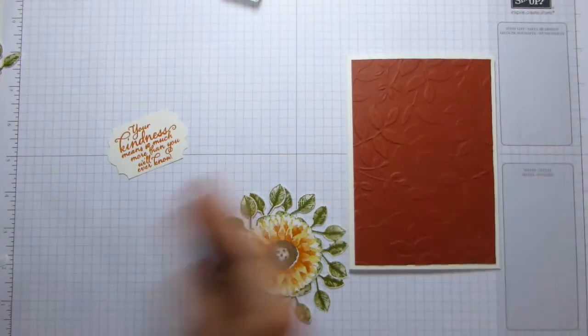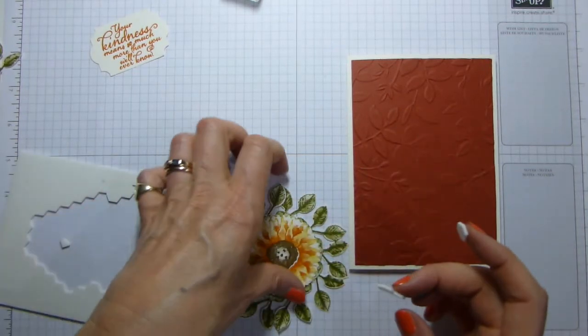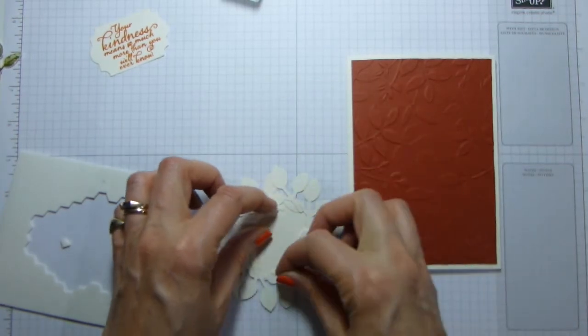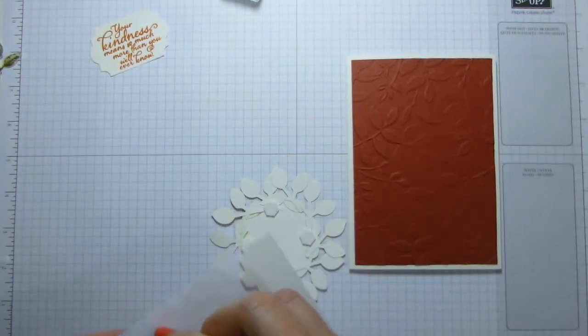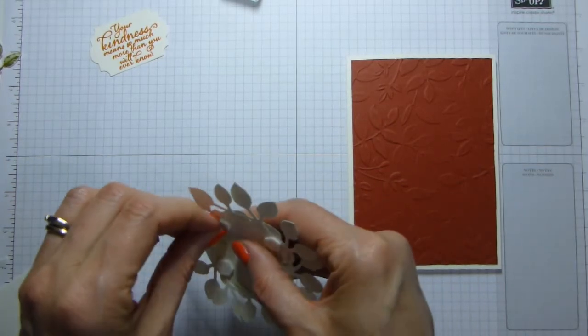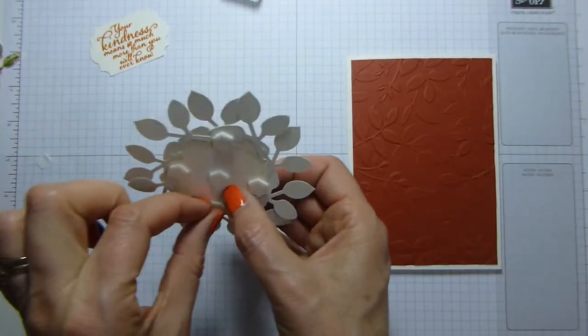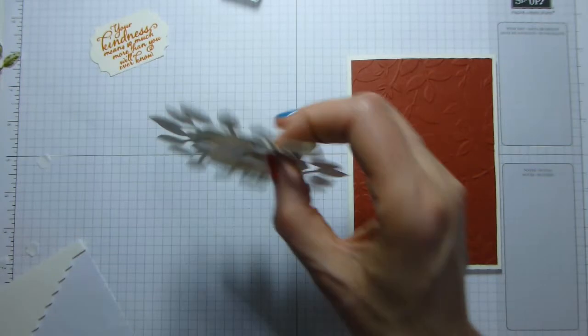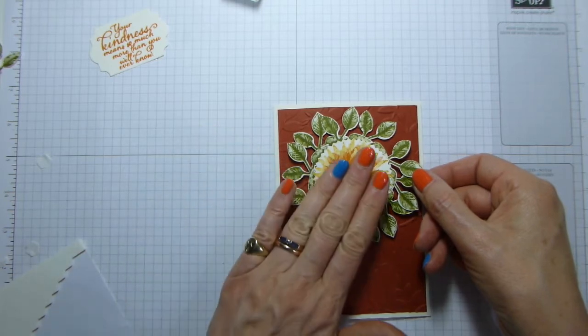So, let's pop everything together. Some dimensionals to go on the back of this. And I'm going to not put any dimensionals on the back of the leaves. I'm just putting them on the punched circle. And I'm going to put a reasonable number. Of course, everything is now sticking to my fingers because I've got a bit of glue on them. So, pop that down. And we've got that ready to go.